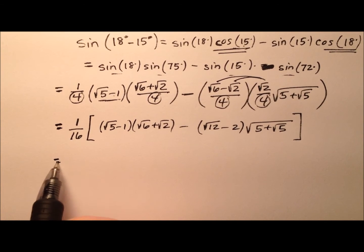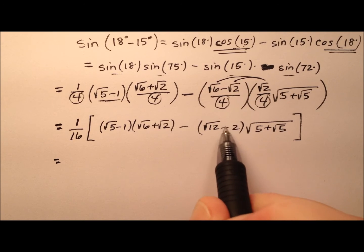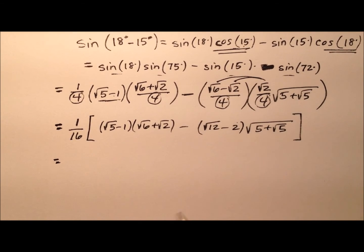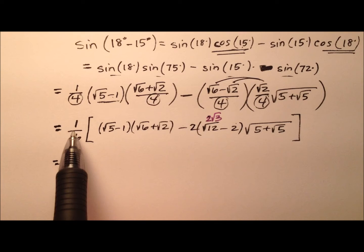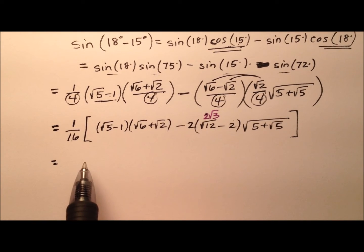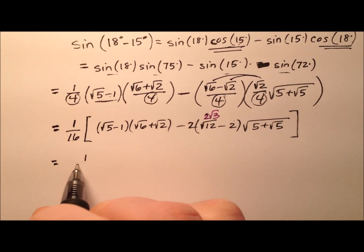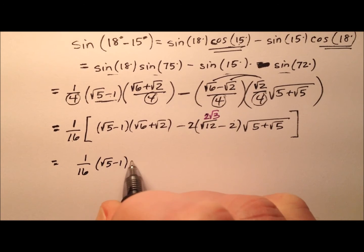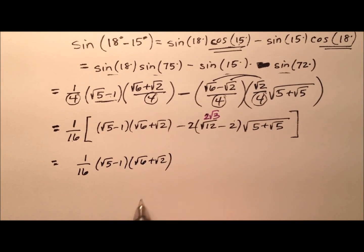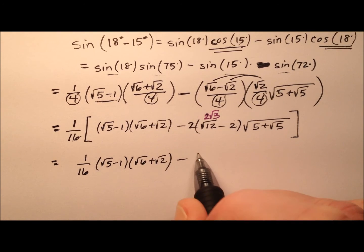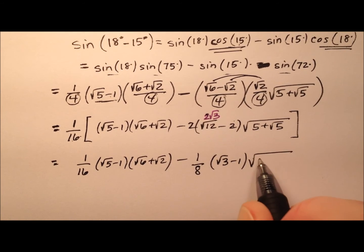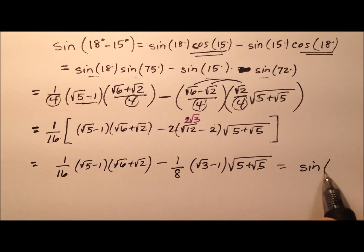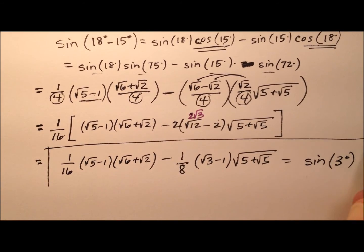What other cleanup can we do? I can factor a 2 out, because the square root of 12 becomes 2 radical 3. So factoring a 2 out and distributing the 1/16 back through gives a little cancellation. So it becomes 1/16 times (√5 minus 1)(√6 plus √2), minus — the 2 over 16 becomes 1/8 — with (√3 minus 1) times the square root of (5 plus radical 5). This expression is the sine of 3 degrees.